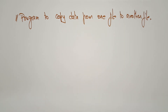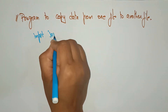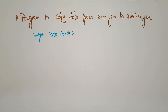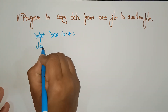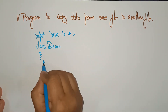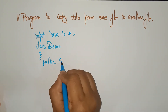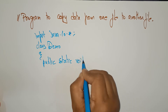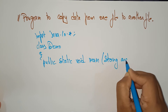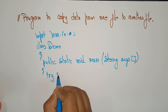First, you have to write the import statement: import java.io.*; — all input/output functions are imported. Then declare the class: class Demo. The class is loaded, opened, and executed. Now call the main method: public static void main(String[] args).